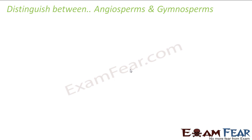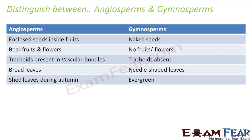Distinguish between angiosperms and gymnosperms. Angiosperms have covered seeds — that means seeds are enclosed inside fruits. Gymnosperms have naked seeds, and reproduction takes place with the help of male and female cones. Angiosperms bear fruits and flowers; in gymnosperms there are no fruits and no flowers. Angiosperms have tracheids present in vascular bundles, whereas tracheids are absent in gymnosperms, even though vascular bundles are present in both. Angiosperms have broad leaves whereas gymnosperms have needle-shaped leaves.